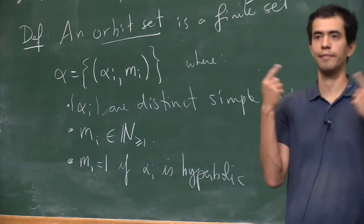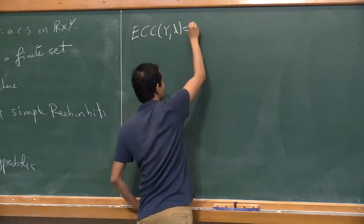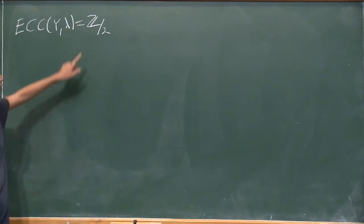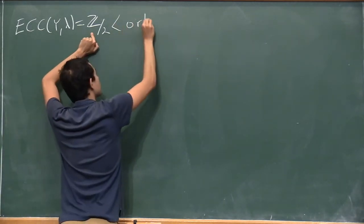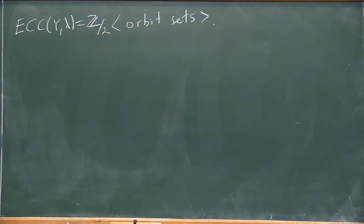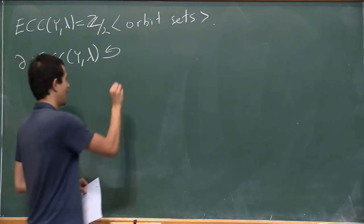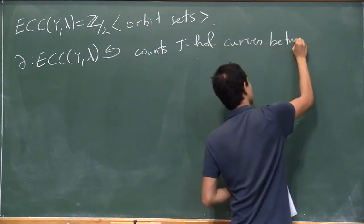We take sets of Reeb orbits with multiplicities. We can define ECC as a Z₂ vector space generated by the orbit sets. Now we want to define a differential, which will take a little time, but the idea is that it counts J-holomorphic curves between two orbit sets.